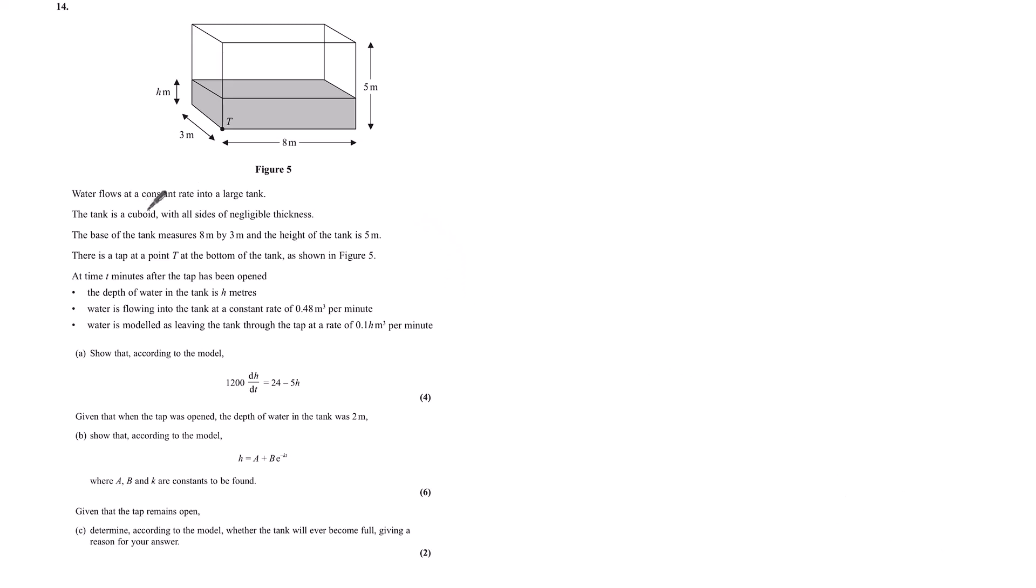Question 14. Water flows at a constant rate into a large tank. The tank is a cuboid with all sides of negligible thickness. The base of the tank measures 8m by 3m and the height of the tank is 5m. There is a tap at point T at the bottom of the tank as shown in figure 5. At time T minutes after the tap has opened, the depth of the water in the tank is hm.